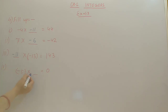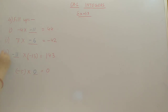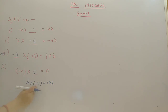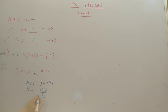Fourth: minus 5 into blank equals 0. Using the property of zero — if we multiply any number with 0, the answer is 0, so the blank is 0. Alternatively for the third part, if you don't know the number directly, you can set A into minus 13 equals 143, then shift minus 13 to the other side as division: 143 divided by minus 13 gives minus 11.